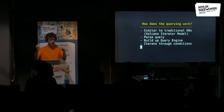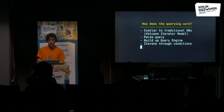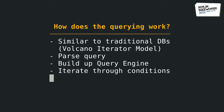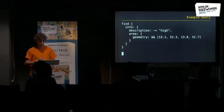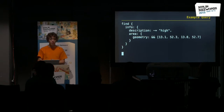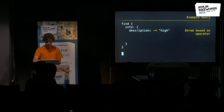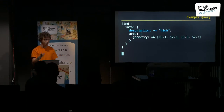This is about the shredding — how data gets indexed. The querying works similarly to a relational database — the volcano iterator model, for all the database geeks in the audience. We parse the query, build up a query engine, and then iterate through the conditions. An example will make it clearer. Our example query has two conditions: first, the description should contain the word 'high'; second, it's a geo query on the area.